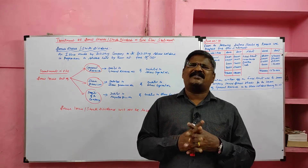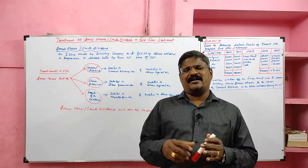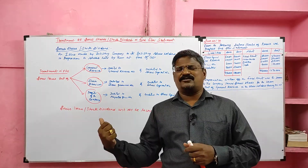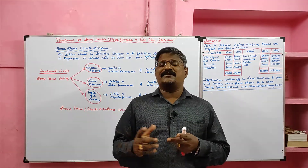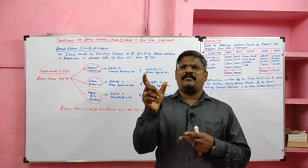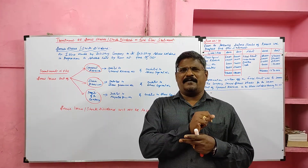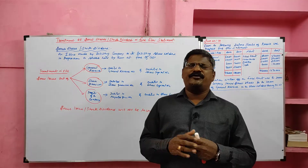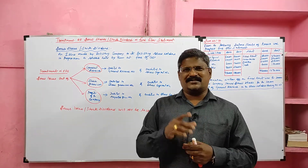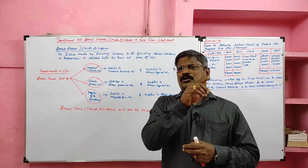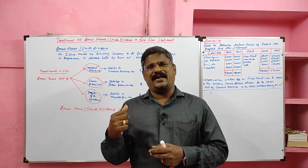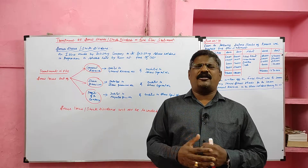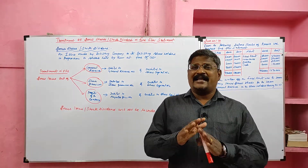In the first case, we make a bonus issue out of general reserve. In the general reserve ledger account, share capital should be debited; in the share capital account, general reserve should be credited. In case two — issue out of security premium — in the security premium ledger account, debit side, we record share capital; in share capital account credit side, by security premium. In the third case, issue out of profits: in the adjusted profit and loss account debit side, write to share capital; in the share capital account credit side, write by adjusted profit and loss account.